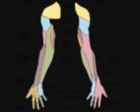Dermatome C6 supplies the anterior arm, the radial side of the hand to the thumb and the index finger. Dermatome C7 supplies the lateral arm and forearm to the index finger, the long finger, and to the ring finger. Dermatome C8 supplies the medial arm to the forearm, to the long finger, to the ring finger, and to the little finger.